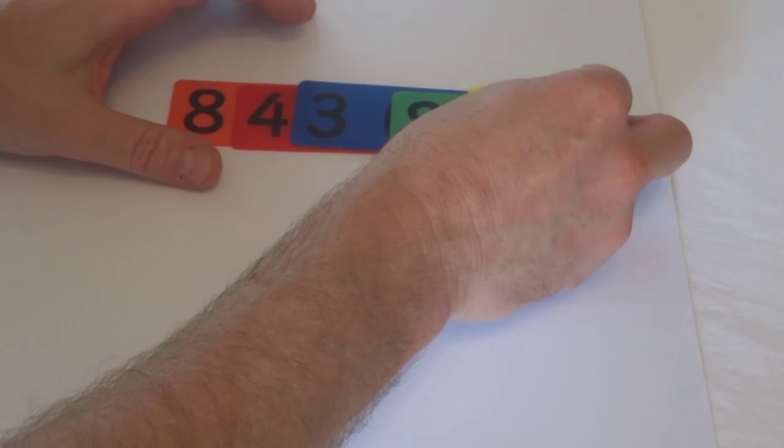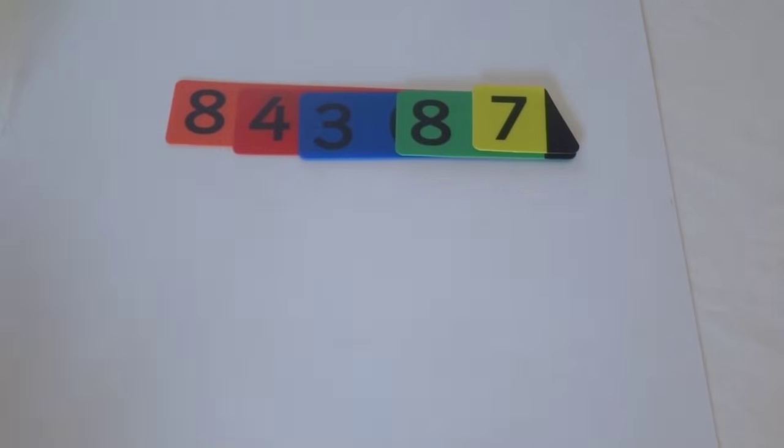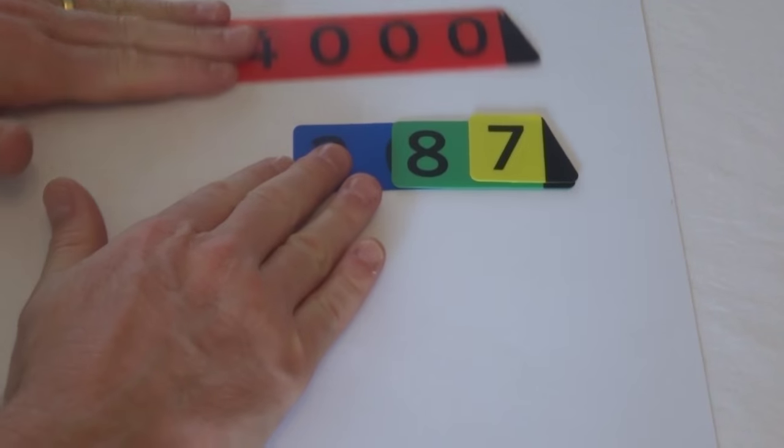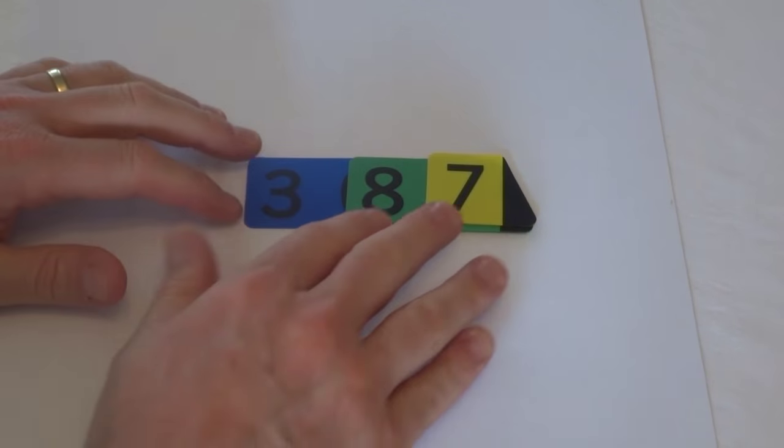And there's the seven. Now later on we can link decimals into there, but we'll just stop here for the moment. Let's just think about this number. Let's just pull off the three hundred and eighty-seven.